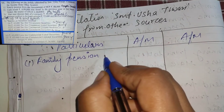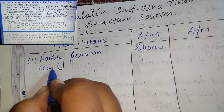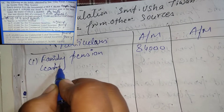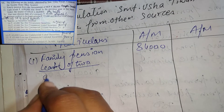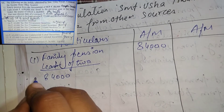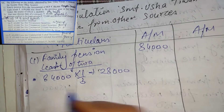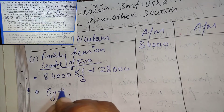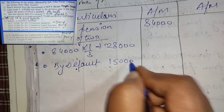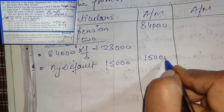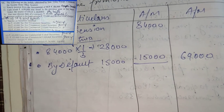As seen in the last question, family pension has two conditions — least of two. First: 84,000 × 1/3 = 28,000. Second condition: by default 50,000 but capped at 15,000. We take the least: 15,000. So 84,000 minus 15,000 = 69,000.